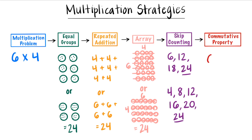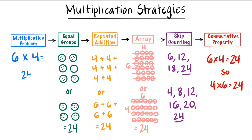Lastly, you can use the commutative property of multiplication. If you know six times four is 24, you know that four times six is also 24. When you multiply, you can use any of these strategies to find your answer. We know the product of six times four is 24.